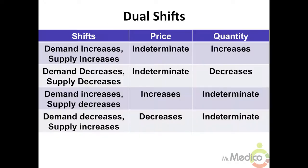When supply and demand both decrease or shift to the left, the equilibrium quantity will decrease but market price will be indeterminate. When supply increases and demand decreases, market price will decrease but equilibrium quantity will be indeterminate. When supply decreases and demand increases, market price will increase but equilibrium quantity will be indeterminate.